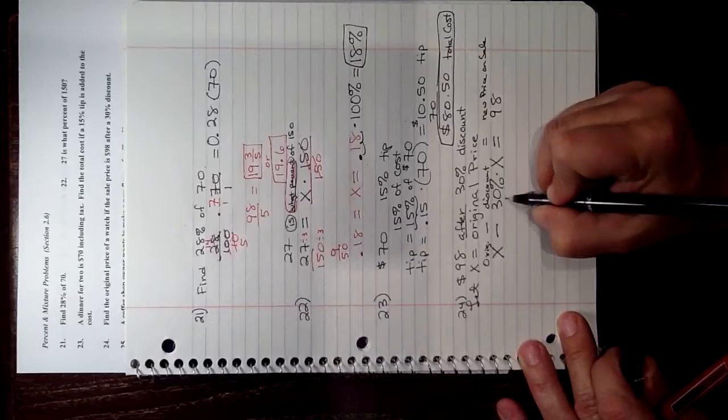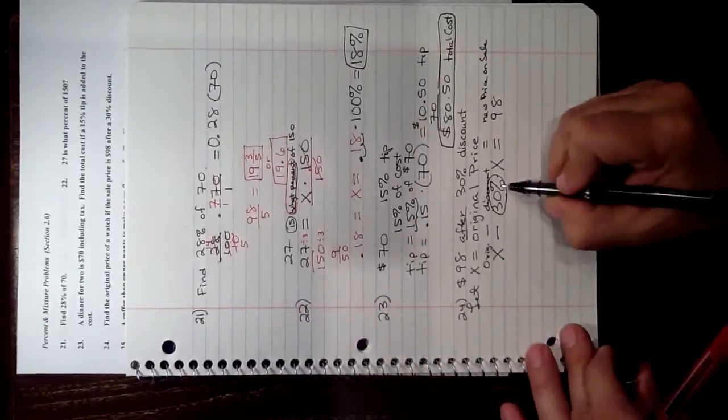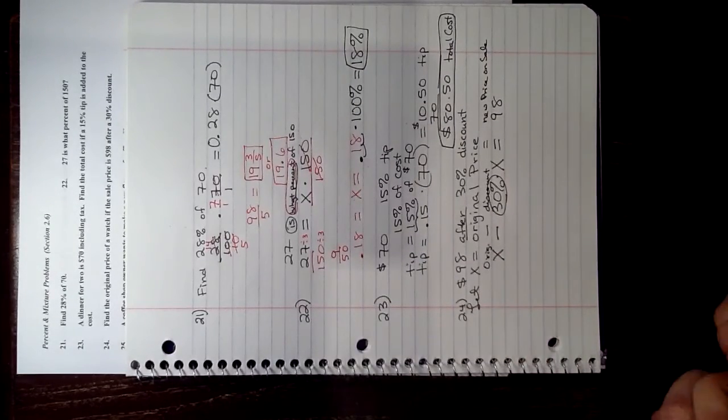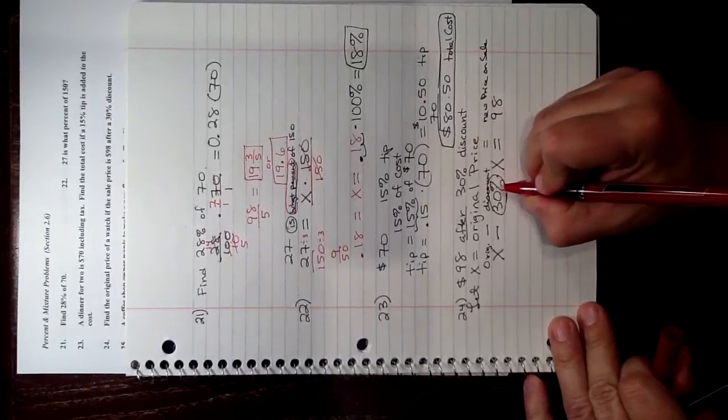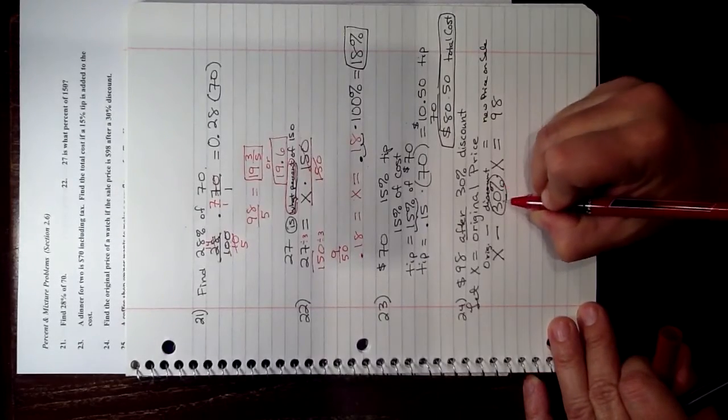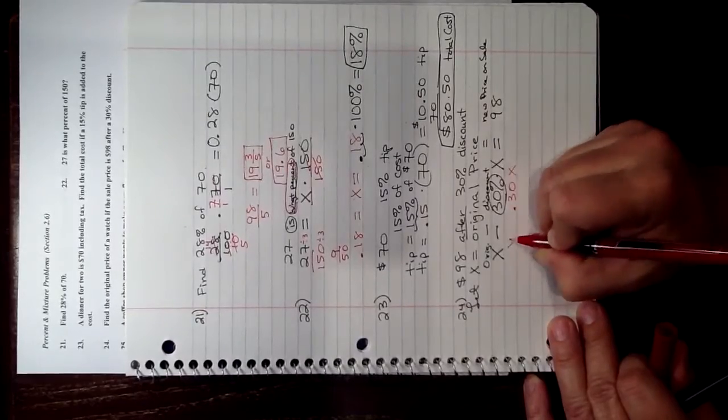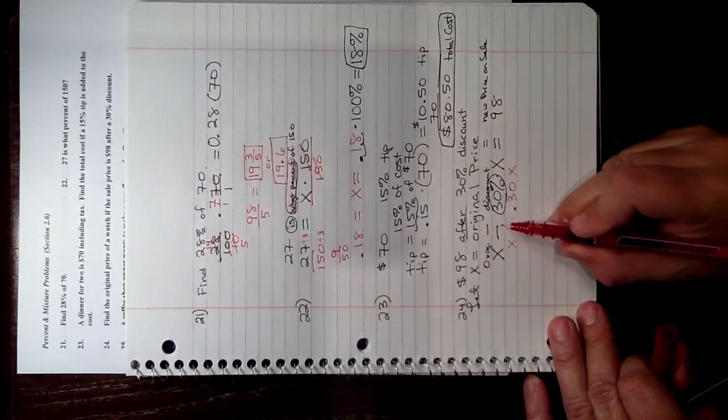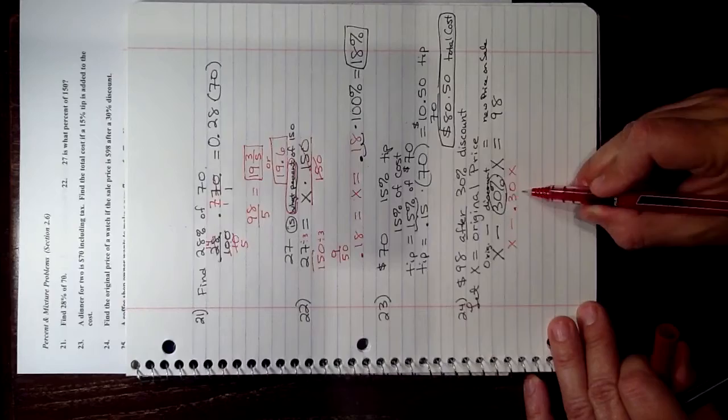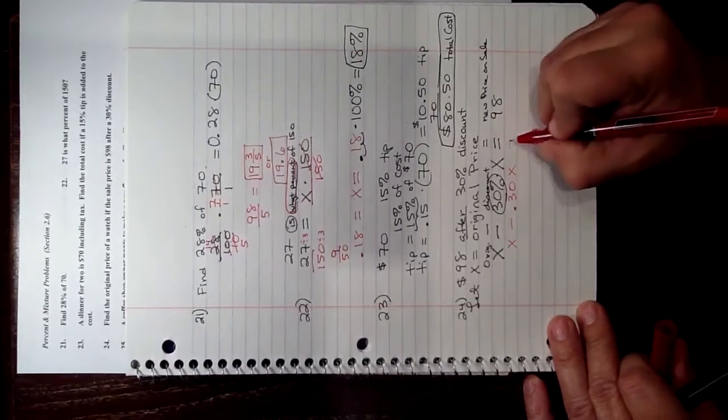So 30%, we're not allowed to leave that percent in our calculation, so 30% means divide by 100, 30 divided by 100 is 0.30, and so if all I do is leave the X and the subtract and just make 30% 0.30X equals 98.